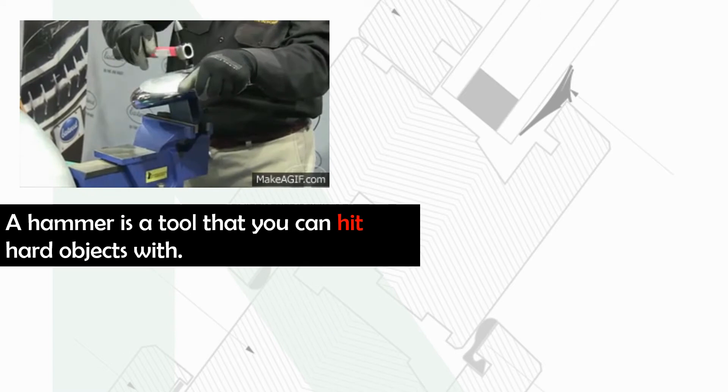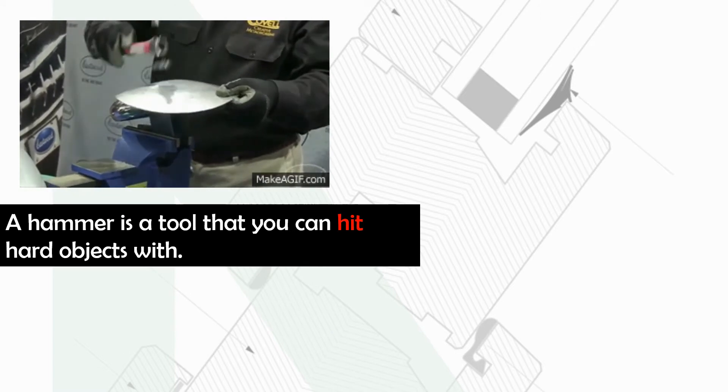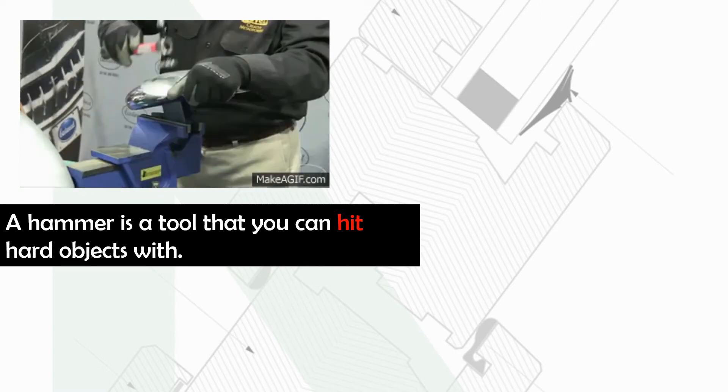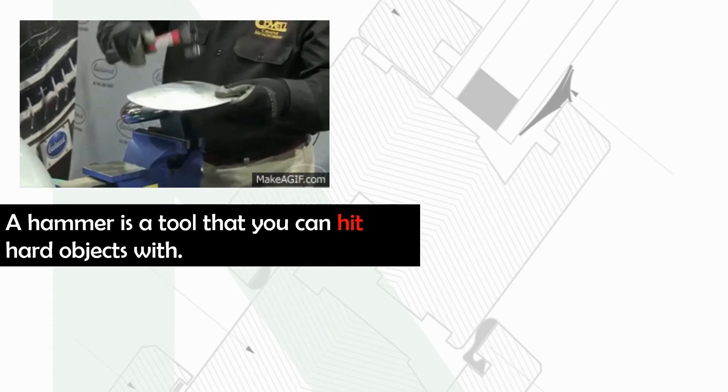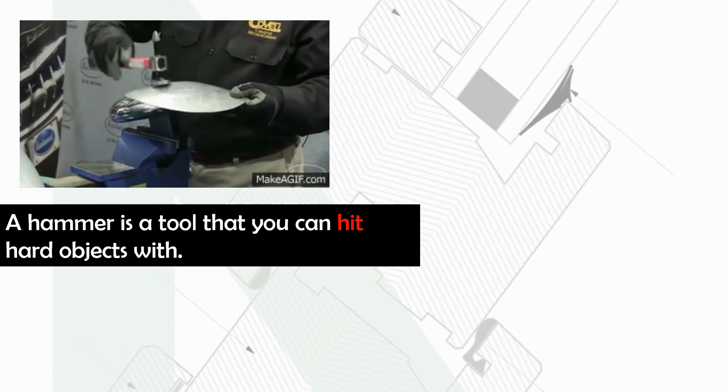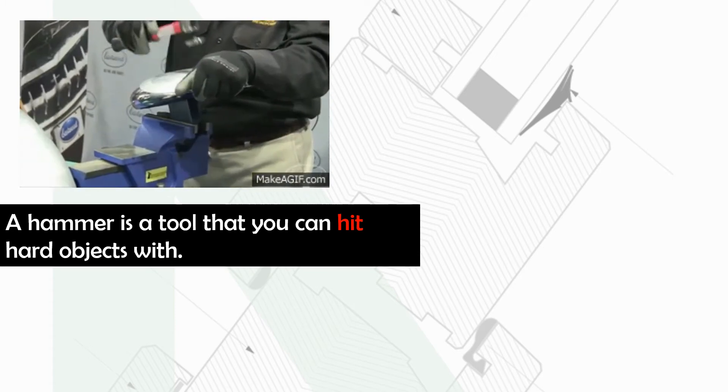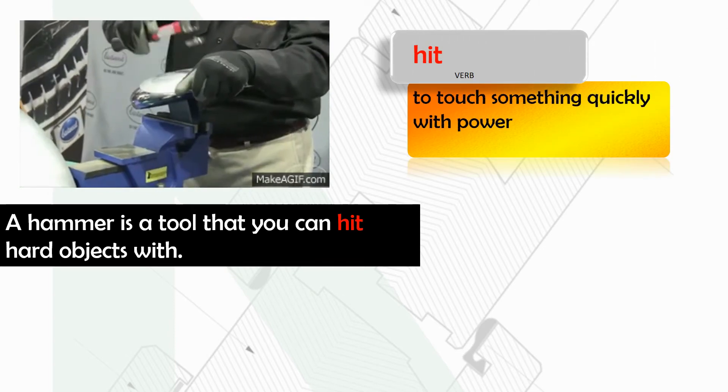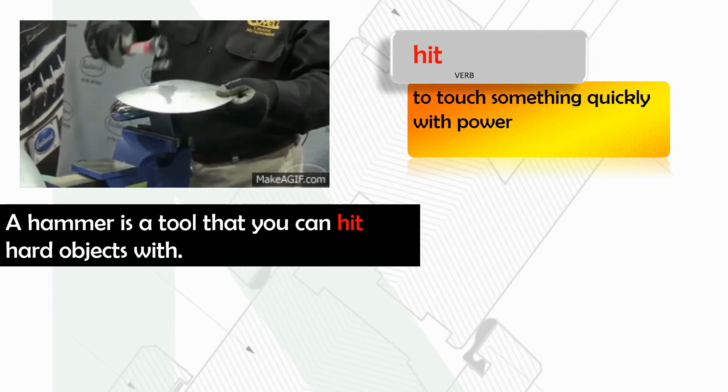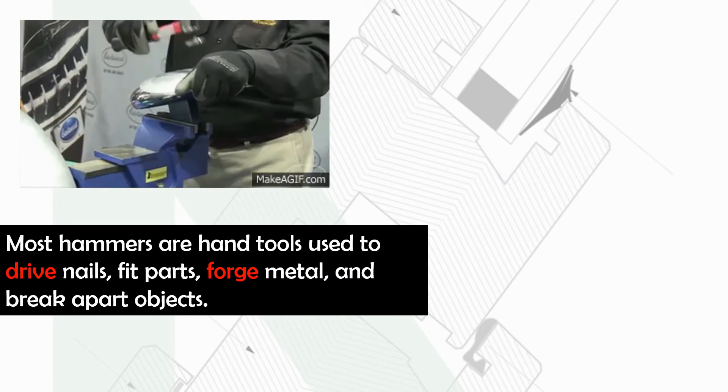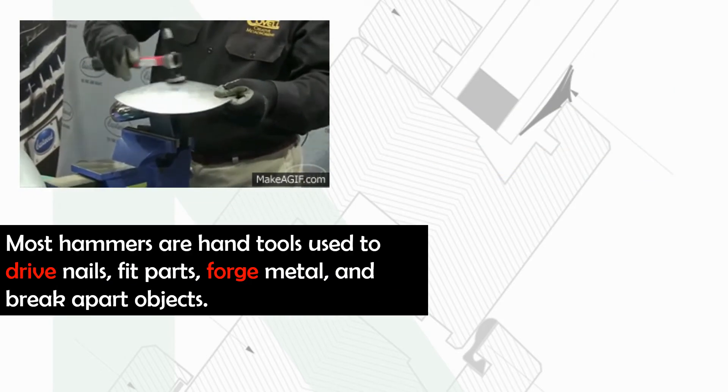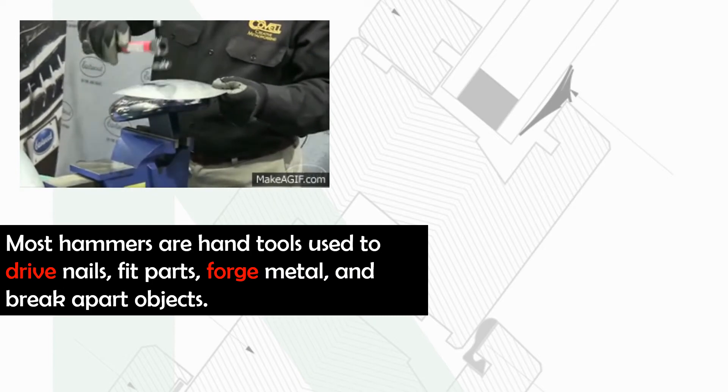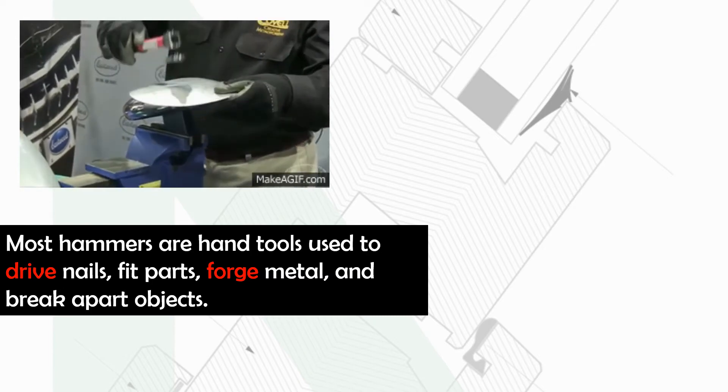Hammers. A hammer is a tool that you can hit hard objects with. An object in this case means a workpiece or a piece of metal that you are working with. It needs to touch something quickly and with power. Most hammers are hand tools and we use them to drive nails, fit parts, forge metal, and break objects apart.